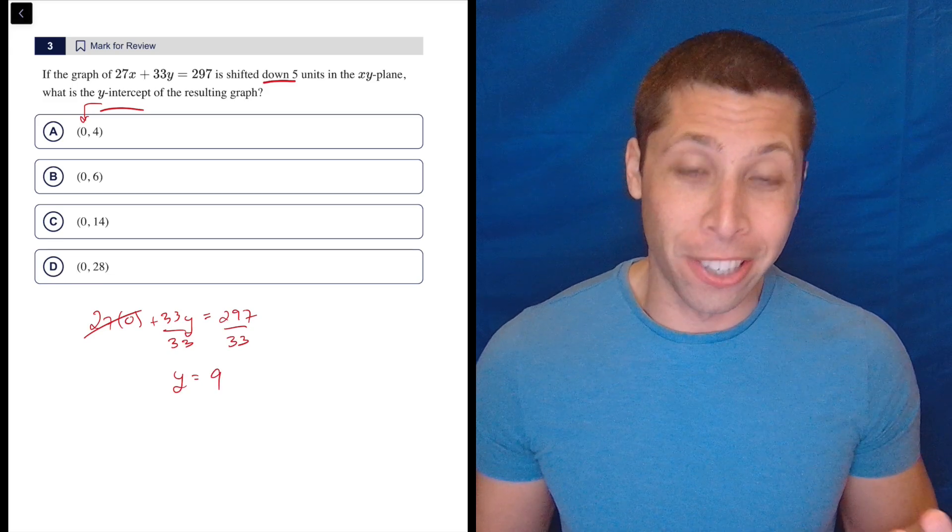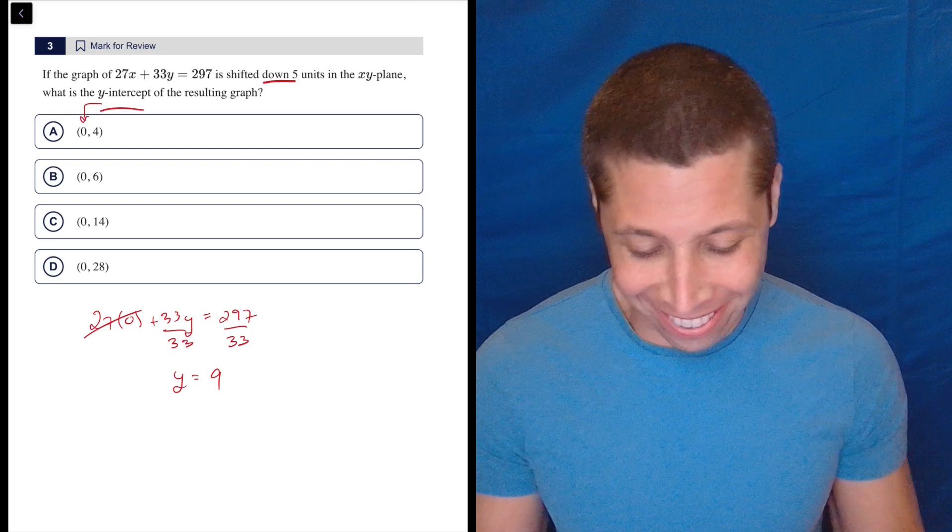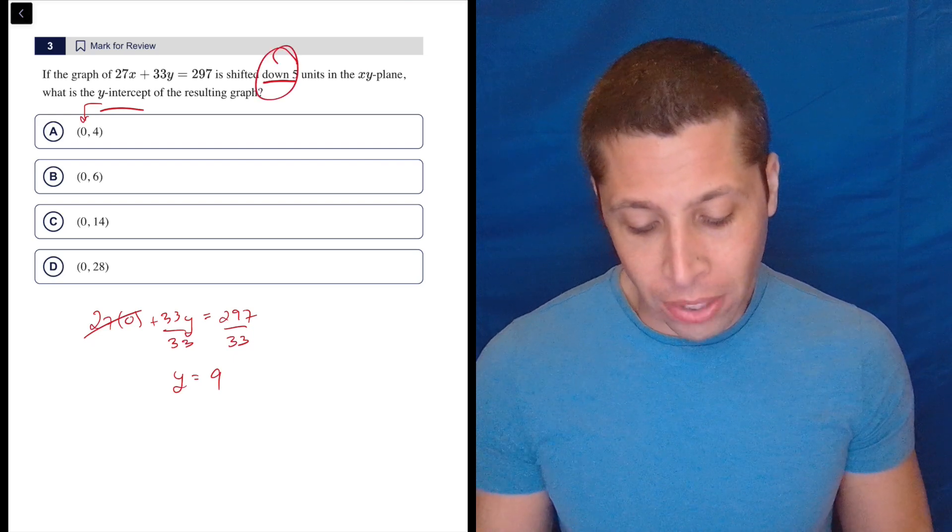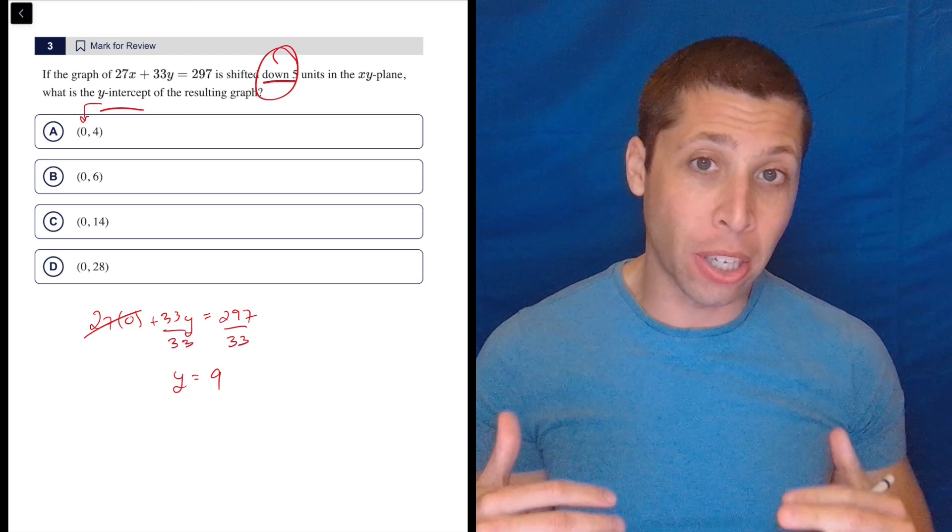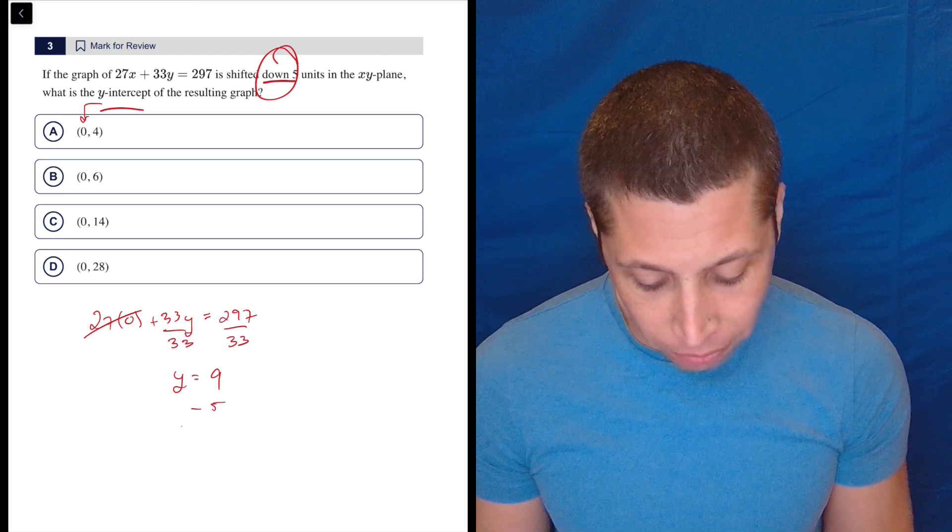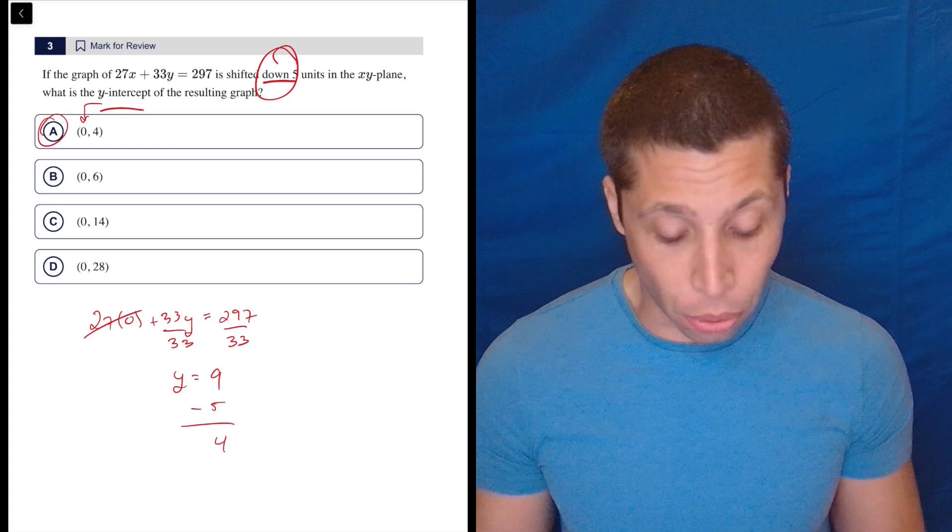I'm surprised that's actually not an answer because some people are going to pick that just because they feel like they've accomplished something. But we still need to follow the instruction of shifting it down five units. That just means the whole graph is going to go down, meaning the y-intercept is going to go down as well. So we subtract 5 and we get 4 and that is choice A.